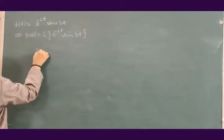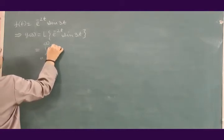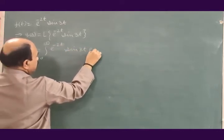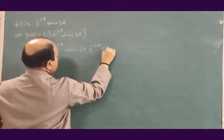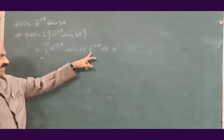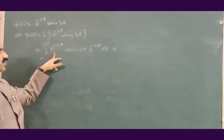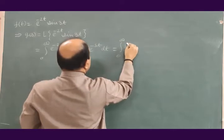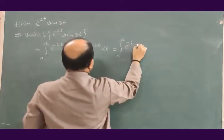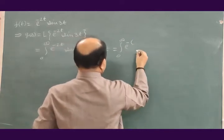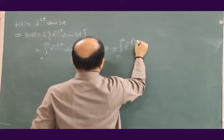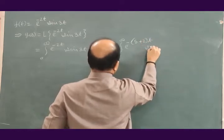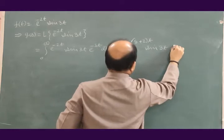G(s) is equal to the integration from 0 to infinity of e to the power minus 2t times sin(3t) times e to the power minus st dt. Let us take e to the power minus st and e to the power minus 2t together to get e to the power minus (s plus 2)t times sin(3t) dt.